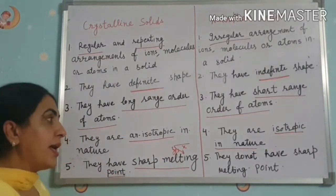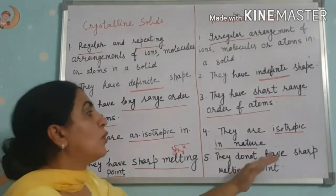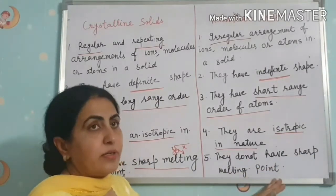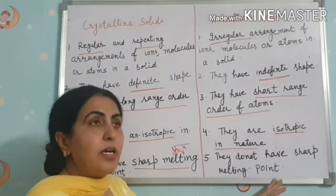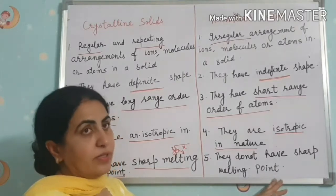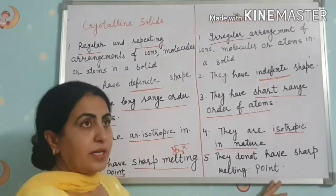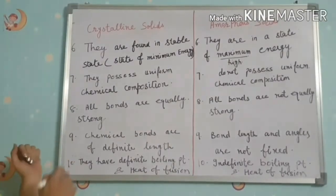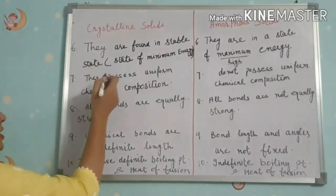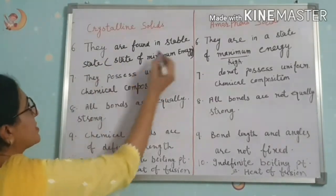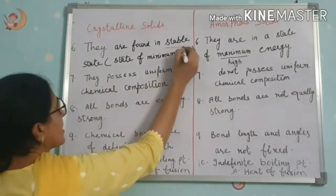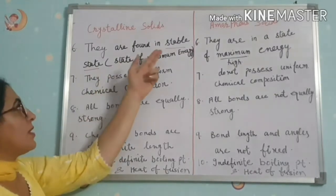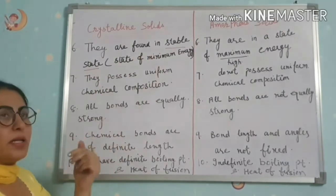The fifth point is about melting point. Crystalline solids have a sharp melting point, while amorphous solids do not have a sharp melting point.